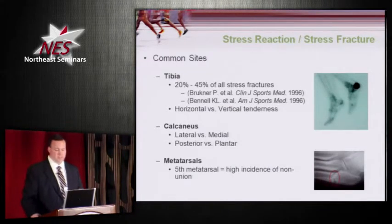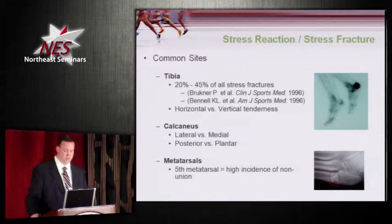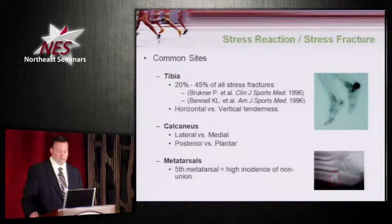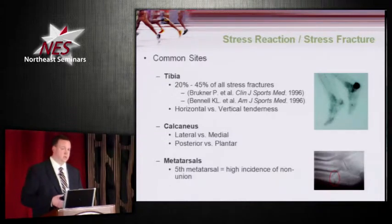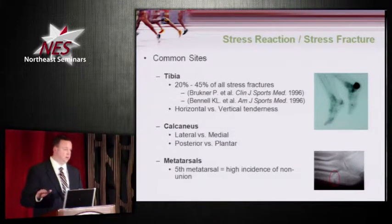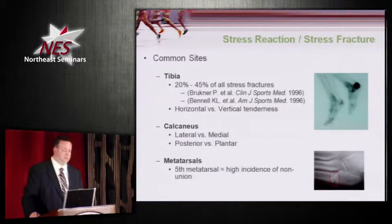Some of the more common sites with stress fractures: the tibia is probably the biggest, representing between 20 and 45 percent of all stress fractures depending on the study. A clinical pearl here is thinking about horizontal versus vertical tenderness. Pain running up and down along the tibia relates more to medial tibial stress syndrome and musculature components, whereas pain across the horizontal plane over the tibia should make you more concerned about the possibility of a stress fracture.